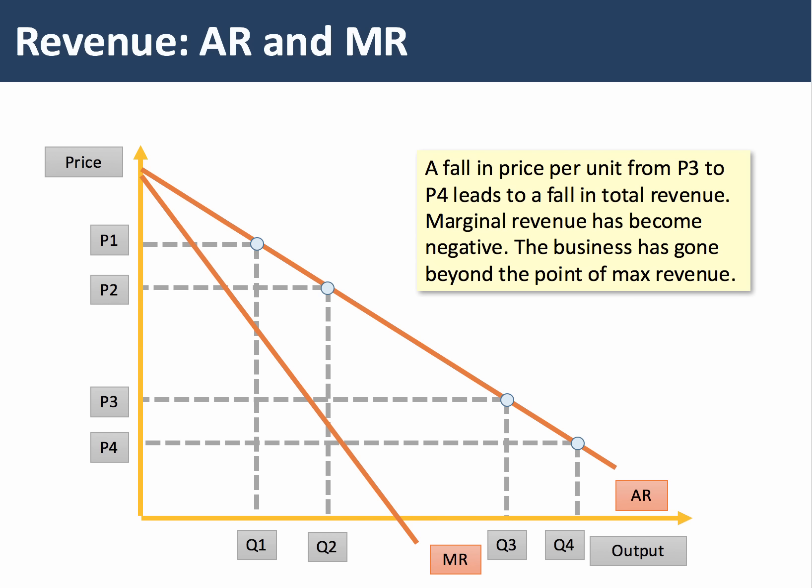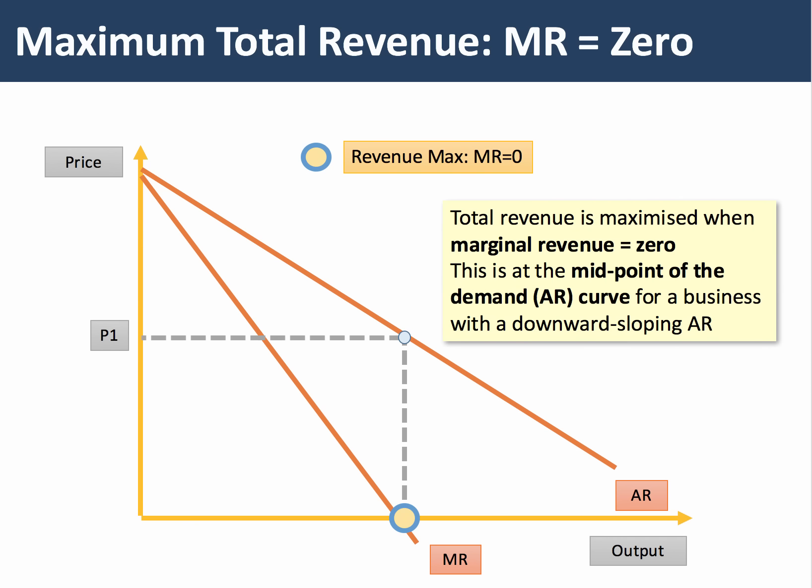Notice that the elasticity of demand along a downward sloping average revenue curve will constantly be changing. When the price falls from P1 to P2, total revenue goes up, therefore demand is elastic. If the price falls from P3 to P4, total revenue falls, and therefore for that price change, demand is inelastic.